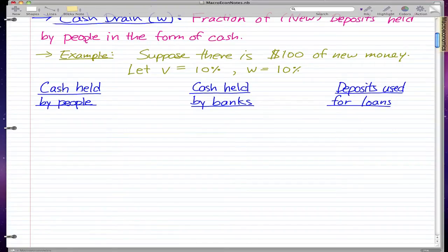In this video I'm going to talk through the example from the last video. V equals 10% and W equals 10%. Remember, V is the target reserve ratio and W is the cash drain. So suppose there is $100 of new money.